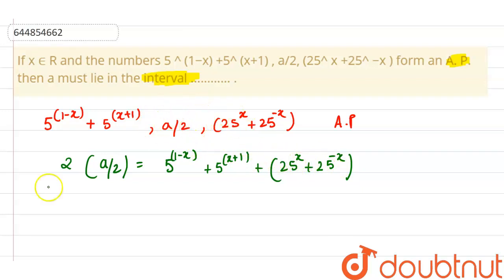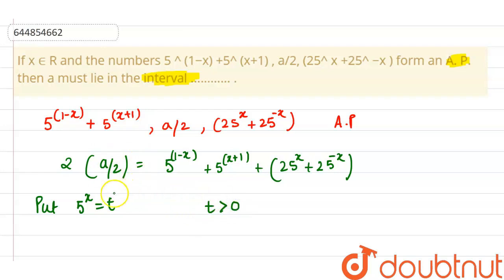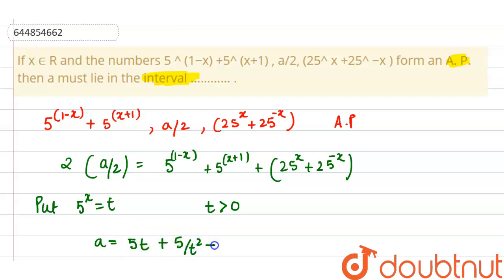Now we substitute 5 to the power x equals t, where t is greater than 0 since 5^x is always positive. The 2s cancel, and we get: a equals 5t plus 5/t plus t² plus 1/t², which equals some positive term. Consider this equation 1.